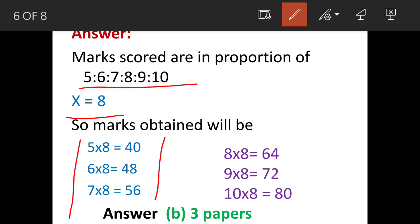So 5×8 is 40, 6×8 is 48, 7×8 is 56, these are below 60. The 100 are maximum marks. So that means these three papers are below 60 percent and these three papers marks are above 60.